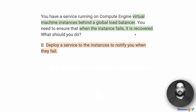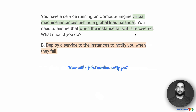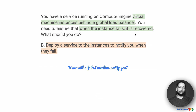Option B suggests that you deploy a service to the instances to notify you when they fail. That does not make logical sense — how is a machine that has already failed going to notify you? So just using common sense, B is not an option at all.